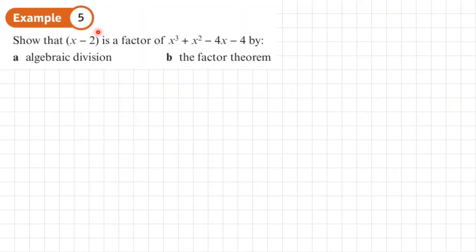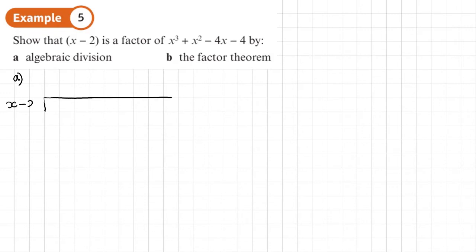Example 5: show that x minus 2 is a factor of x cubed plus x squared minus 4x minus 4, by (a) algebraic division and (b) factor theorem. Normally in an exam you would choose one way or the other. Our divisor is x minus 2, and we have x cubed plus x squared minus 4x minus 4, with all descending powers of x.